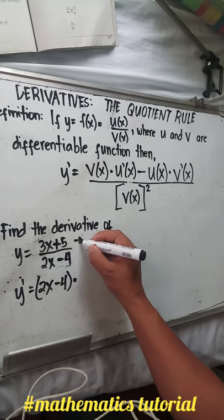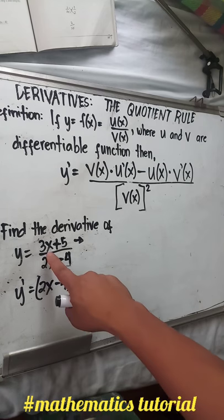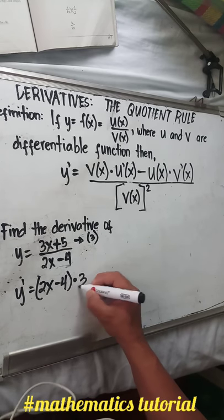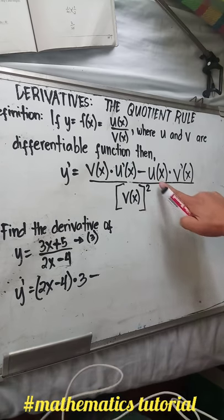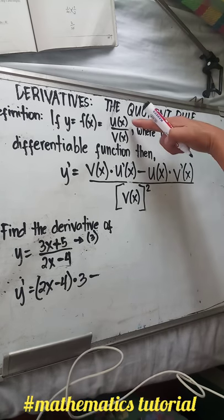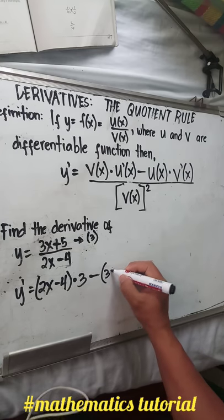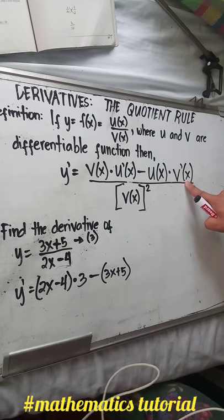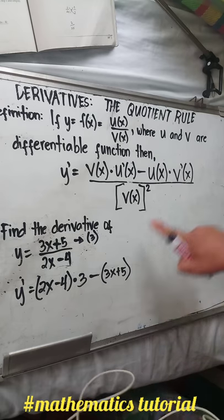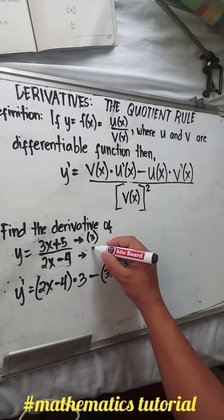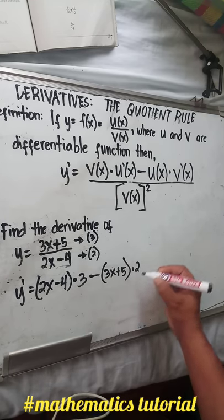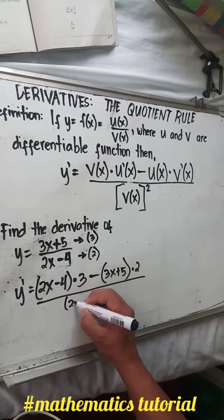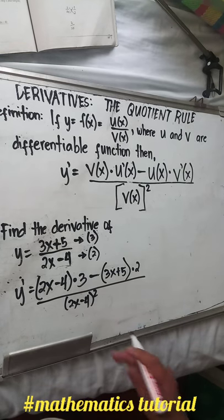The derivative of the numerator: what is the derivative of 3x minus 5? That is 3. So multiply that by 3. Subtract u of x — that is the value of the numerator, which is 3x plus 5 — times the derivative of 2x minus 4, which is 2. So times 2, over the squared denominator — the quantity (2x minus 4) squared.